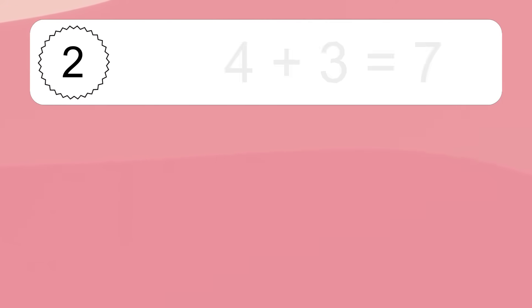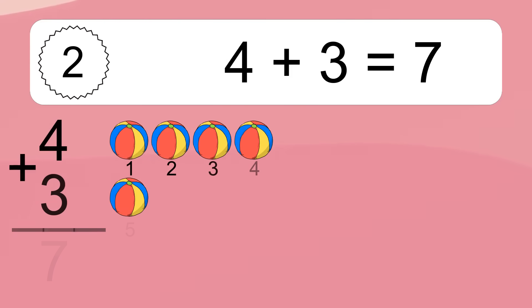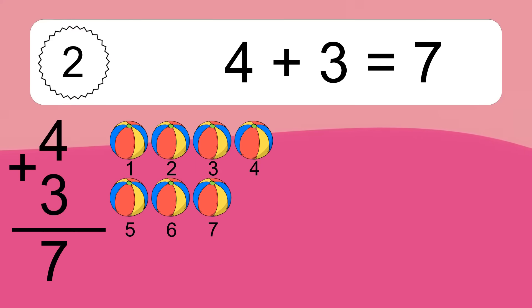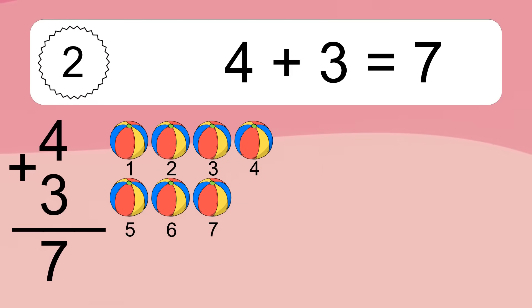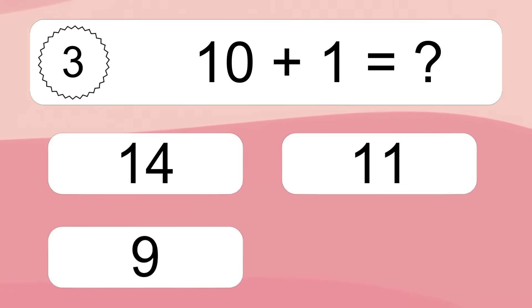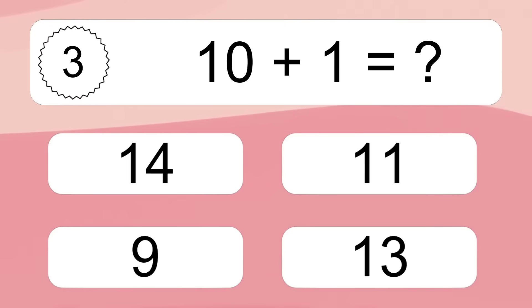4 plus 3 equals what? 4 plus 3 equals 7. Let's count it: 1, 2, 3, 4, 5, 6, 7.